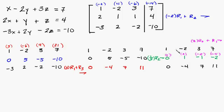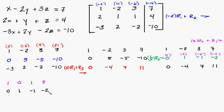So we're going to add this row to this row — row 2 plus row 1. 0 plus 1 is 1. 2 plus negative 2 is 0. Negative 2 plus 3 is 1. And negative 4 plus 7 is 3. And then just go ahead and copy everything else down: 0, 1, negative 1, negative 2, 0, negative 4, 7, 11.